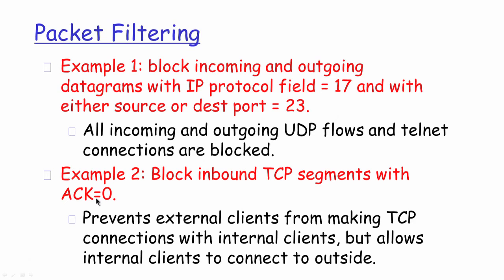Example two: block inbound TCP segments with ACK equal to 0. This helps the firewall prevent any external device from trying to make a TCP connection with any internal machine on the local intranet. A SYN segment for TCP connection establishment from the outside network coming into an internal node would be blocked, but internal clients or devices can still successfully establish connections to the outside world, since the filter specifically targets only inbound TCP segments and does not block outbound TCP segments.